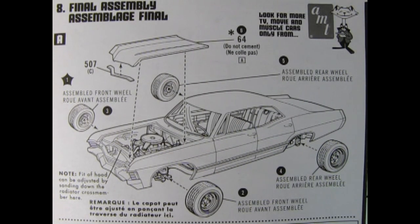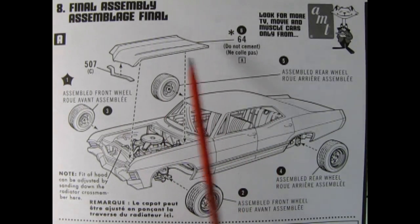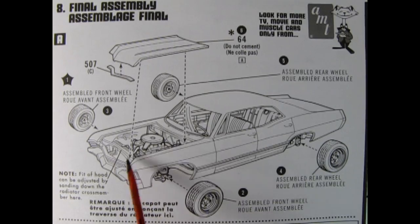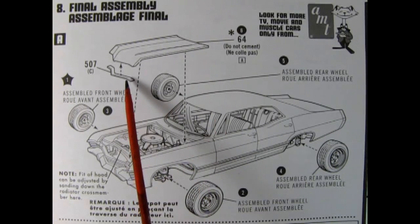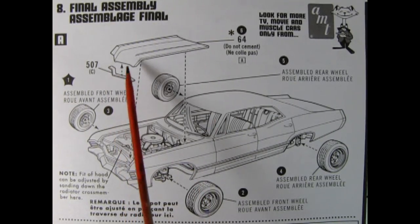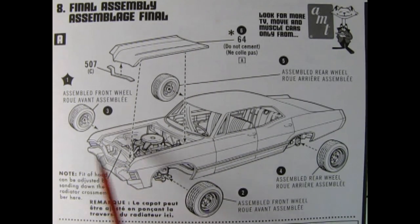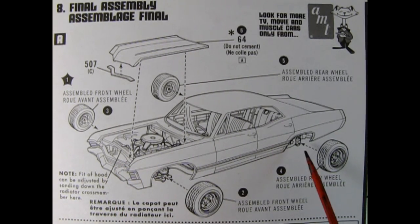Step eight, final assembly. Here we have the final assembly in step eight. What we have is the hood. Now do not cement the hood otherwise you won't be able to open it and see the engine. We also have this nice piece of chrome which glues up underneath the hood as part of the trim for the front grille. Here we can see our wheels being installed onto the little points on the ends of each of the axles.